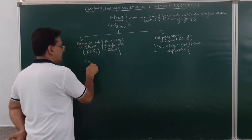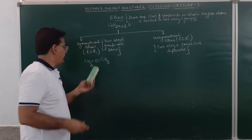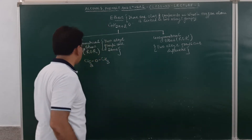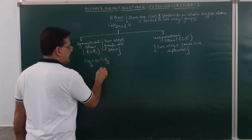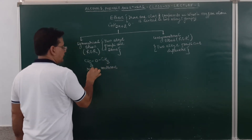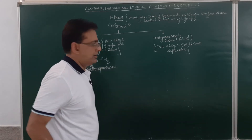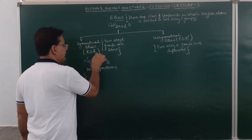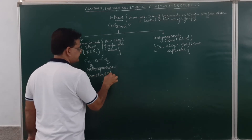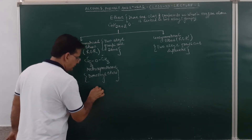For example, CH3-O-CH3: here you can see that to the oxygen atom two alkyl groups are attached and both these alkyl groups are the same, so this will be coded as a symmetrical ether. For one carbon atom the root word is methane and this is an alkyl group, so the name of this compound will be given as methoxymethane, or we may easily call it dimethyl ether.